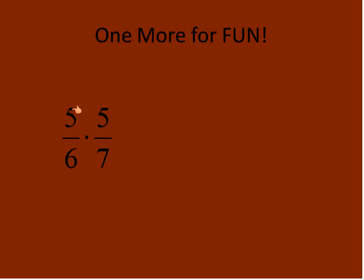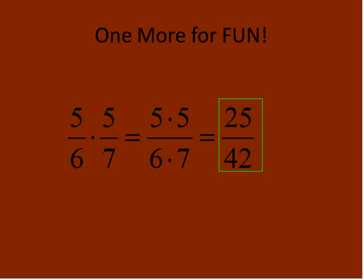All right, one more for fun. 5 over 6 times 5 over 7. We're going to do 5 times 5, 6 times 7. We'll get 25 over 42. Again, that is in lowest terms, so we're done. Pretty good.